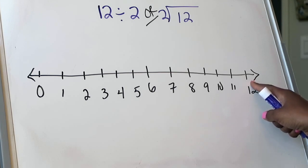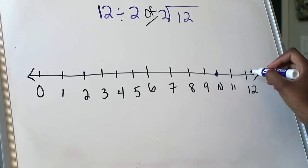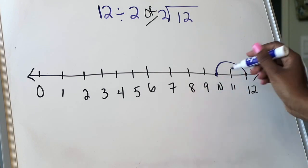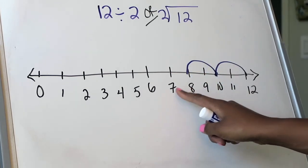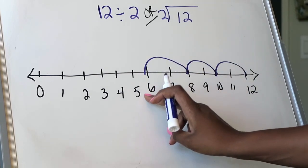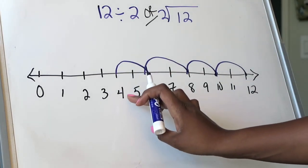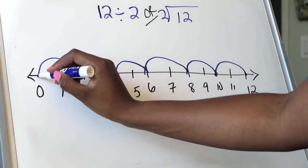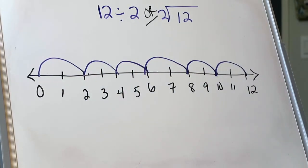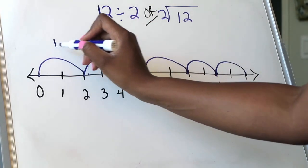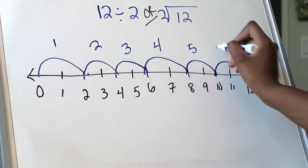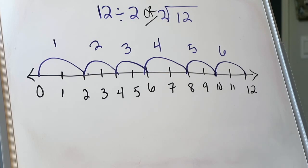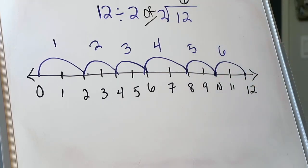Starting at 12 and jumping back 2: 1, 2 — I land on 10. Jumping back from 10: 1, 2 — I land on 8. Jumping back from 8: 1, 2 — I land on 6. Jumping back from 6: 1, 2 — I land on 4. Jumping back from 4: 1, 2 — I land on 2. And then jumping back from 2: 1, 2 — I finally land on 0. Now I need to figure out what my number line is telling me my quotient is. I count how many jumps in total I made: 1, 2, 3, 4, 5, 6 jumps on the number line. So the quotient of 12 divided by 2 is 6 because I did a total of 6 jumps backwards.